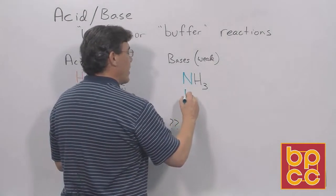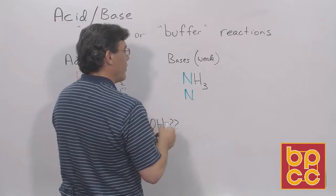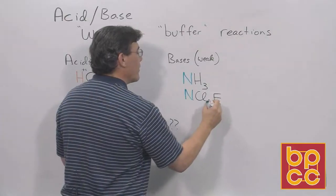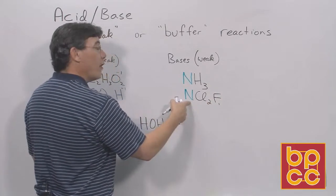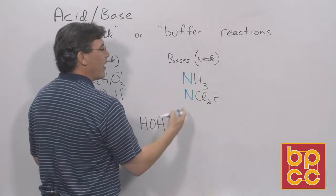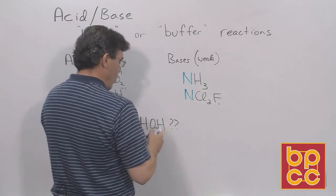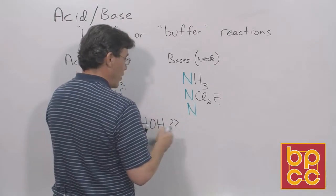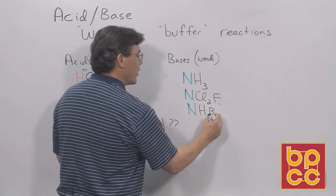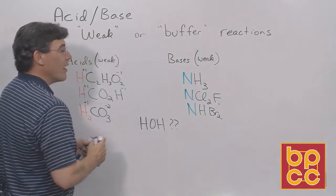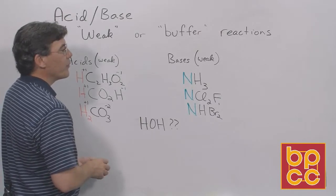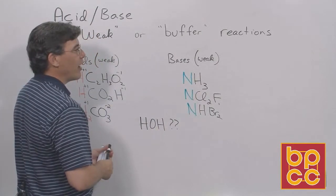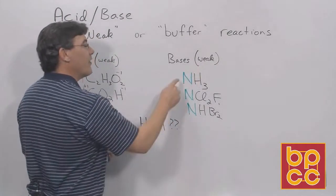Another weak base might be, again beginning with nitrogen, and we can have Cl2 and maybe a fluorine, NCl2F. Notice that the number of atoms connected to the nitrogen always seem to add up to three. In this case three hydrogens, here two chlorines and a fluorine, or we could have maybe a third one, nitrogen with one hydrogen and two bromines, NHBr2, adding up to a total of three atoms connected to the nitrogen.